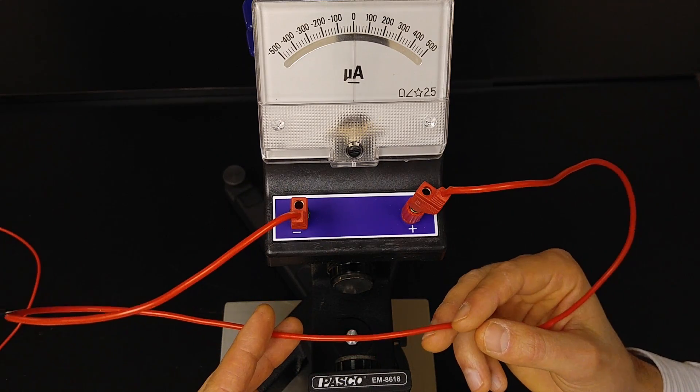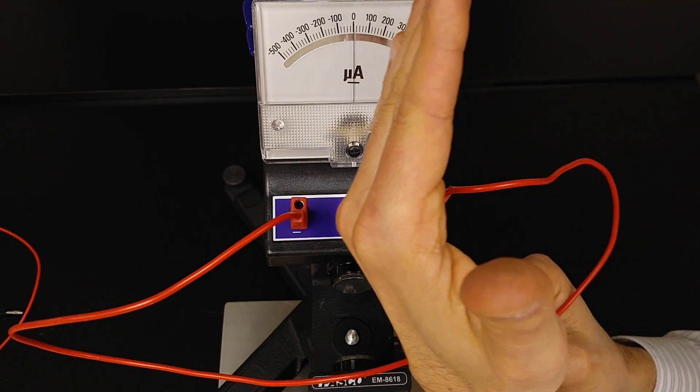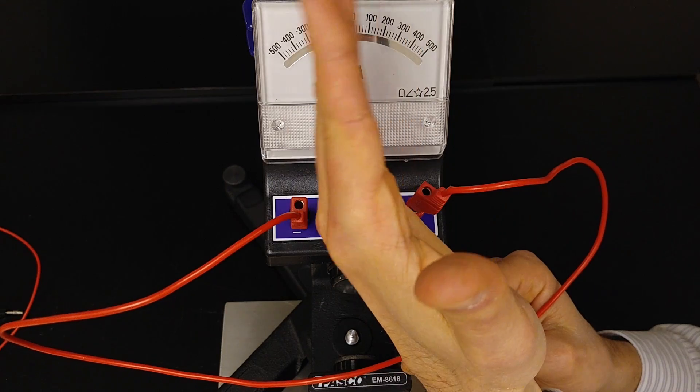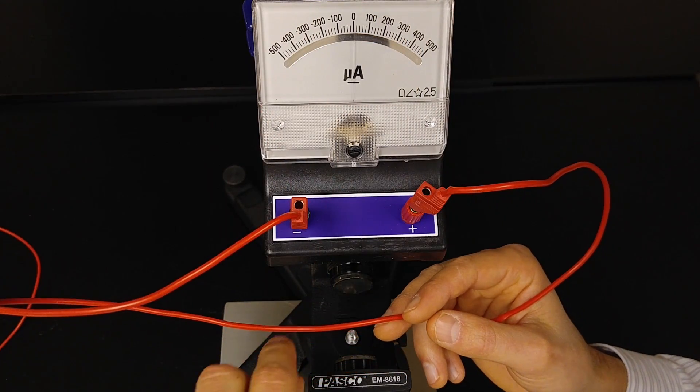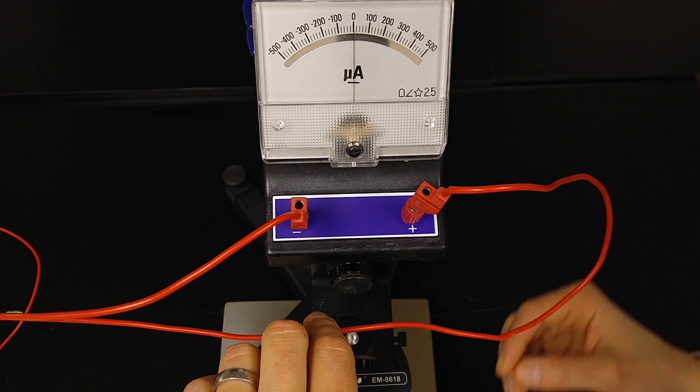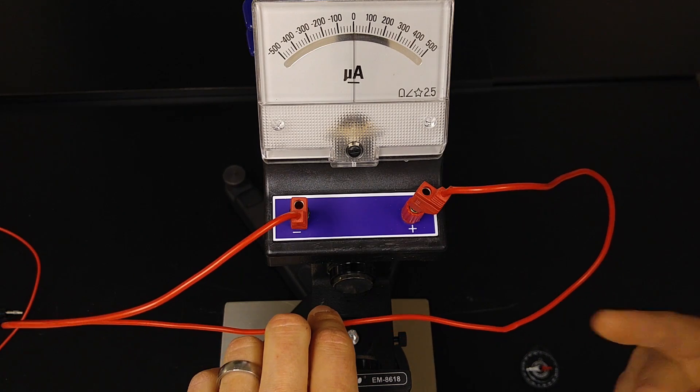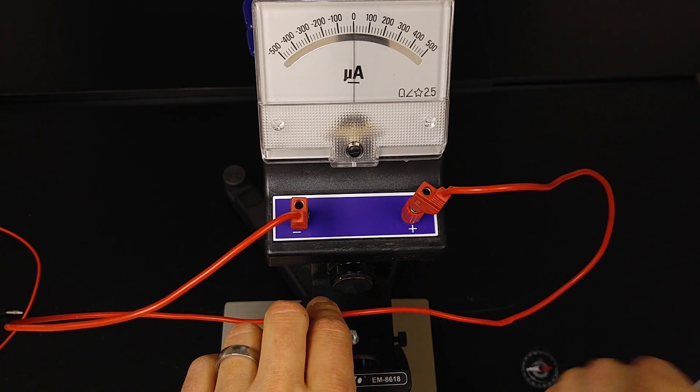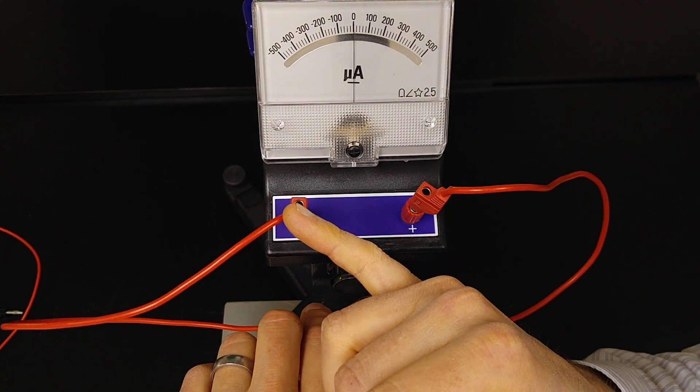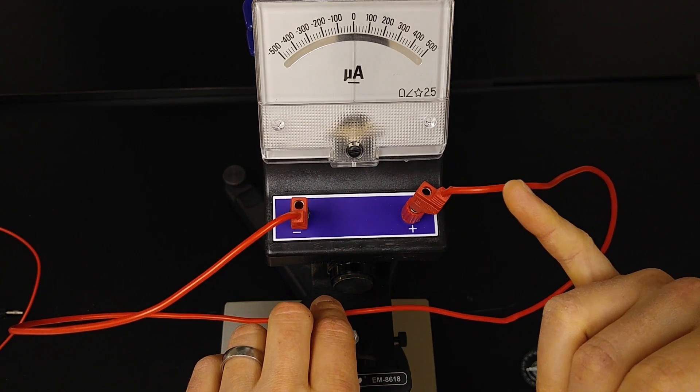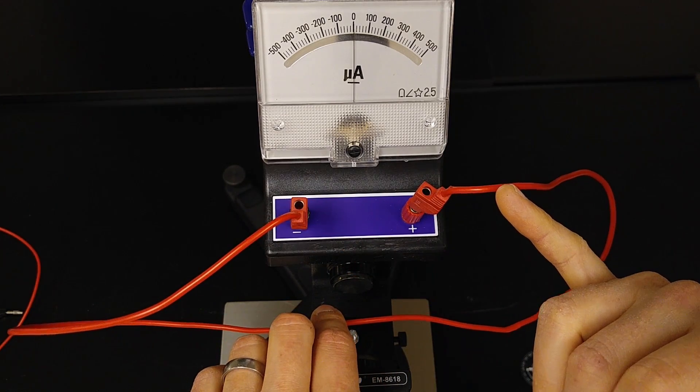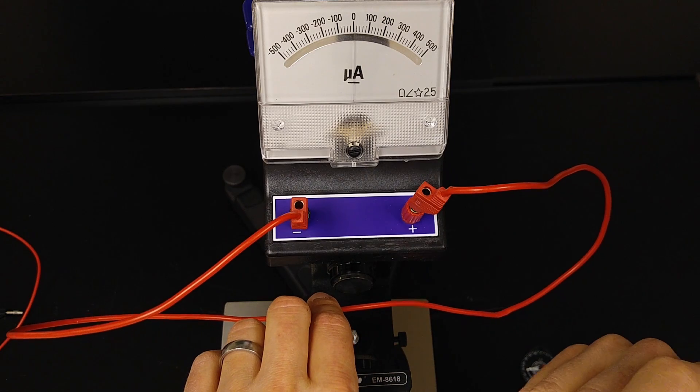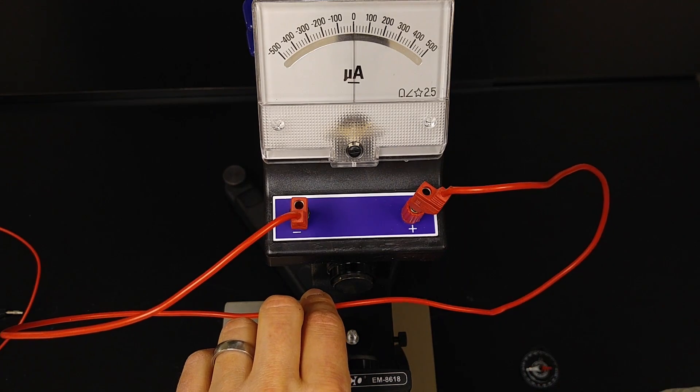we can see that the needle of the galvanometer deflected to the left just a little bit, about 10 or so microamps, which means when the conductor was moving upwards, this side was acting like the high potential side, this side was acting like the low potential side, and so this thing acted like a battery in reverse, just a very weak battery.